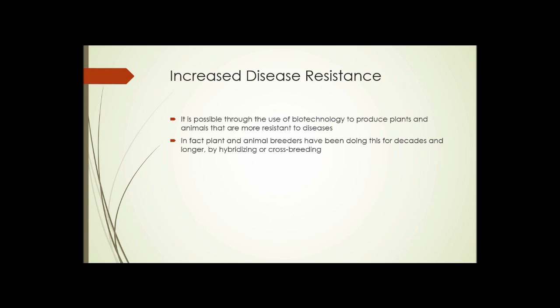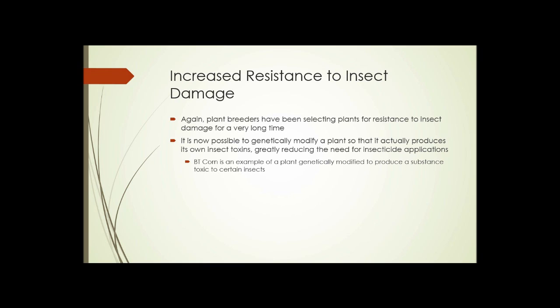Increased disease resistance: it's possible through the use of biotechnology to produce plants and animals that are more resistant to diseases. In fact, plant and animal breeders have been doing this for decades and longer by hybridizing and crossbreeding. Increased resistance to insect damage: plant breeders have been selecting plants for increased resistance to insect damage for a very long time, but it's now possible to genetically modify a plant so that it actually produces its own insect toxins, greatly reducing the need for insecticide applications.